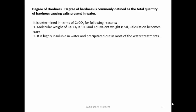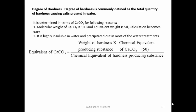Next is degree of hardness. It is commonly defined as the total quantity of hardness-causing salts present in water. It is always determined in terms of calcium carbonate for two reasons: first, the molecular weight of CaCO₃ is 100 and its equivalent weight is 50, so calculations become easy. Second, it is highly insoluble in water and easily precipitated out. The formula is: weight of hardness-producing substance × chemical equivalent of CaCO₃ (50) ÷ chemical equivalent of the hardness-producing substance.